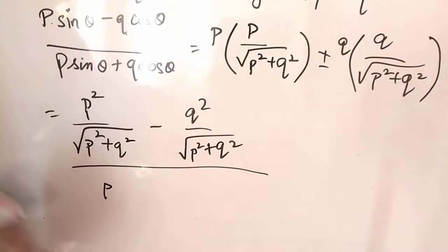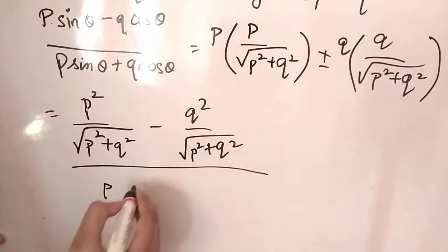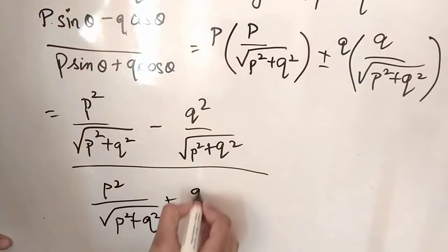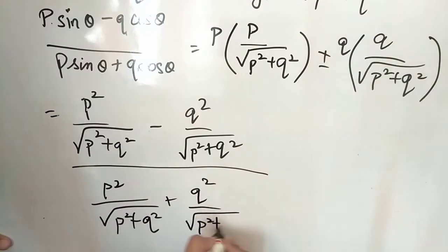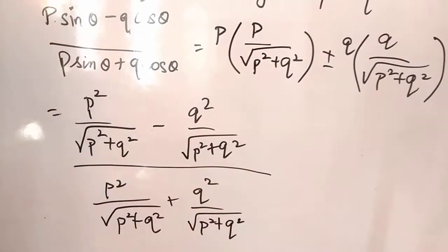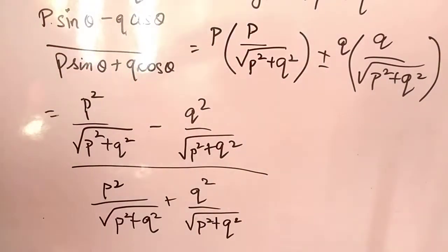Now, P, that is P square by root over P square plus Q square plus Q square, plus Q square by root over P square plus Q square. Correct? So this is one full equation actually. Now, now let's solve it. Now, let's solve it. Once I show the full board.